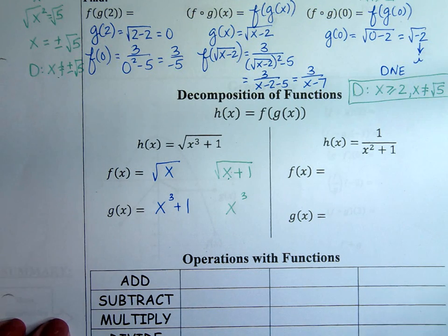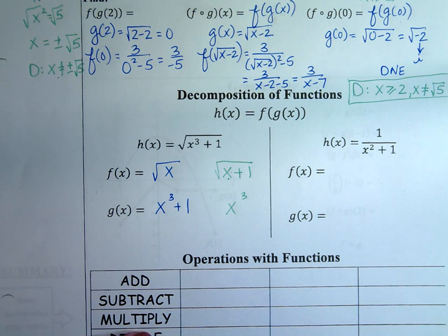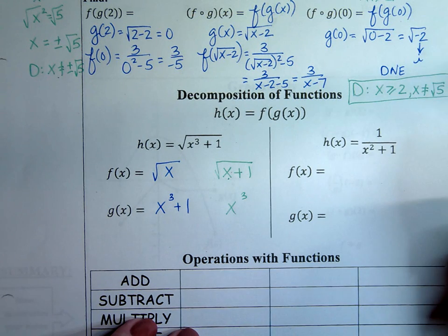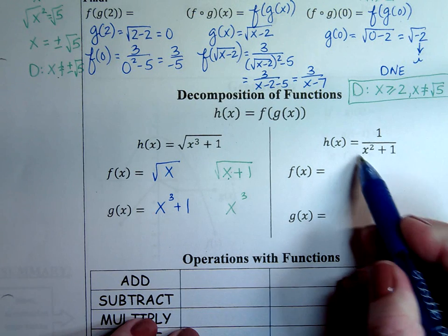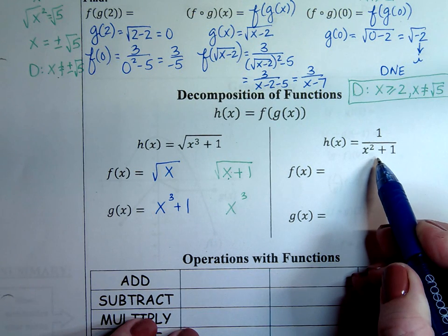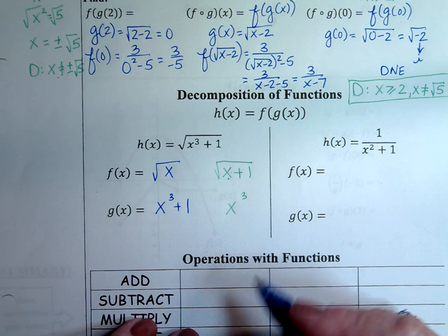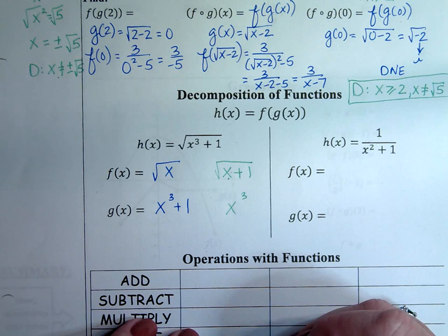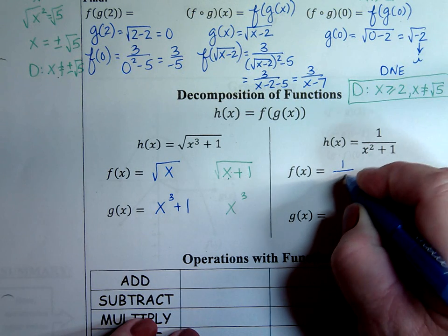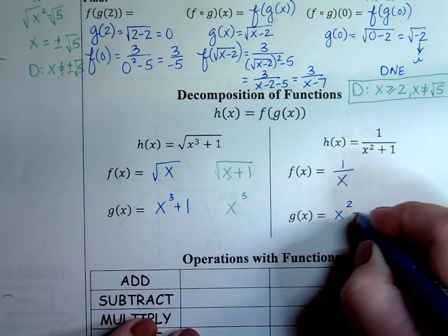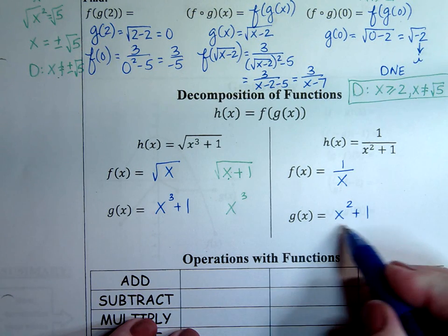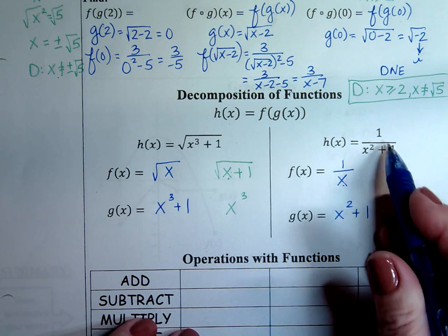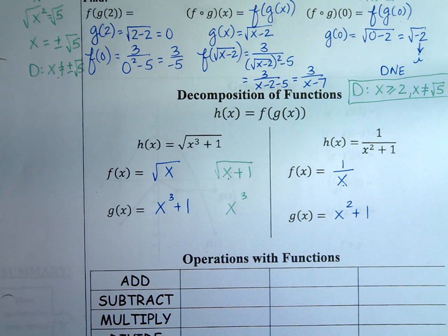Second decomposition example: h of x = 1 over x squared plus 1. One of the component functions is probably x squared plus 1 and the other is 1 over x. Make F of x = 1/x and G of x = x squared plus 1. When you plug G into F, you get 1 over x squared plus 1, which is what you wanted. Remember, there are multiple correct answers for decomposition problems.